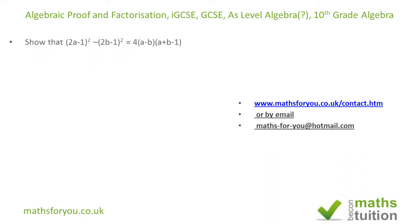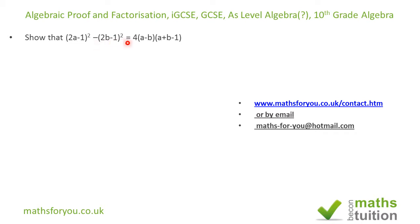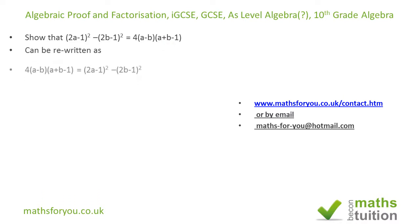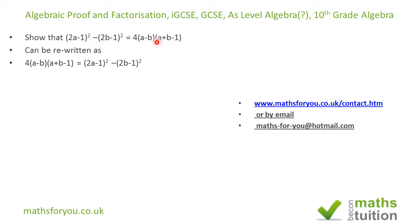We are asked to show that (2a - 1)² minus (2b - 1)² equals 4(a - b)(a + b - 1). I tried expanding the left-hand side first, but it got very complicated, so I decided to work from the right-hand side instead — though you can do it both ways if you want.